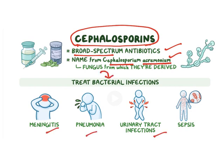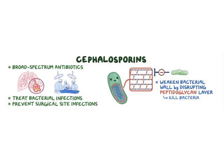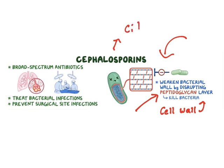Cephalosporins are widely used to treat many bacterial infections like meningitis, pneumonia, urinary tract infections, and sepsis. Their mechanism of action involves disrupting peptidoglycan, which is responsible for the cell wall. When the cell wall is disrupted, cell death occurs, so cephalosporins act as bactericidal agents. A major use is to treat bacterial infections and prevent surgical site infections.